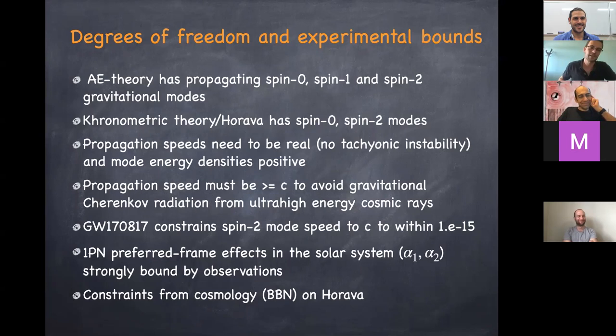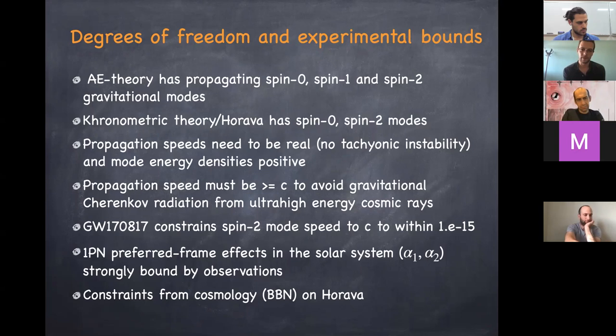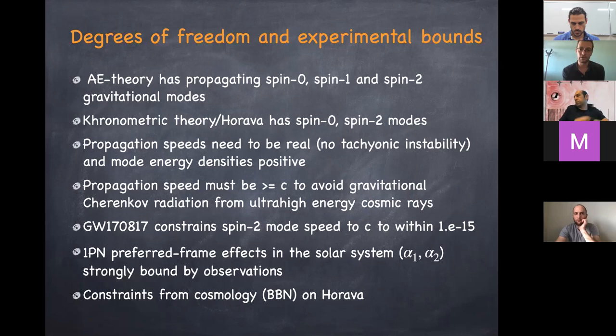Before going to black holes, a few words about experimental bounds on these theories. Einstein-Aether theory, which introduces a vector field, has additional gravitons beyond GR: a spin-2 tensor mode, plus scalar and vector modes. Khronometric theory has only the scalar khronon on top of the tensor modes of GR. There are a number of observational and theoretical constraints: propagation speeds of all modes must be real — no tachyonic instabilities — and the energy of perturbations must be positive.